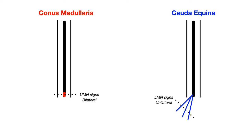What causes conus medullaris syndrome versus cauda equina syndrome? You can think of conus medullaris syndrome as a transverse myelitis, and cauda equina syndrome as a lumbar radiculopathy. With lumbar radiculopathy, those intervertebral discs go to one side or the other, pushing up against those hanging nerves, producing lower motor neuron signs. Transverse myelitis means inflammation across the entire spinal cord, which is why you see upper motor neuron signs and bilateral motor and sensory findings.